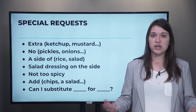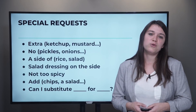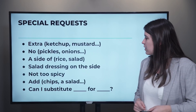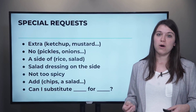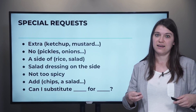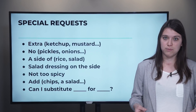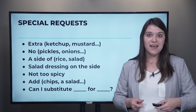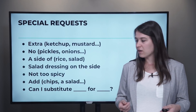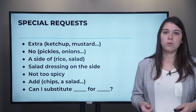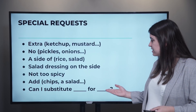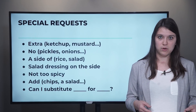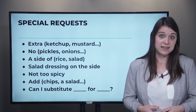Not too spicy — if you order something like a curry or Mexican food and you don't like spicy food, please don't make it too spicy. If you want to add something, this means you are asking for something that doesn't normally come with the meal. You can say 'Can I add chips?' or 'Can I add a salad?' You'll have to pay extra or pay a supplement for this additional item. And if you want to make a change, for example, 'Can I substitute?' — so, 'Can I substitute French fries for salad?' This isn't always possible, but you can ask if it is.